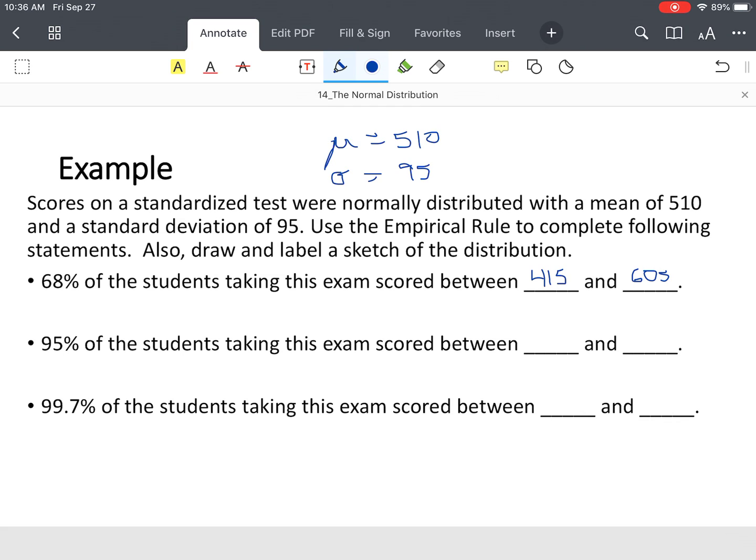That means 68% of the students or test takers who took this test scored between 415 and 605. Now, the 95% mark, or two standard deviations away. We'll go 415 and subtract another 95, that's 320. We'll take 605 and add 95, that will be 700. We'll take 320 and subtract 95, that's 225. Take the 700, add 95, that's 795.